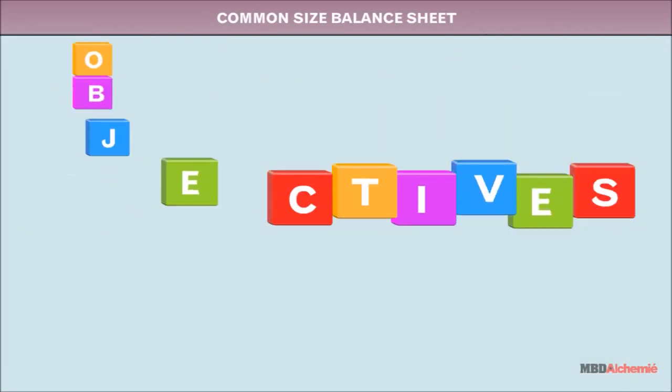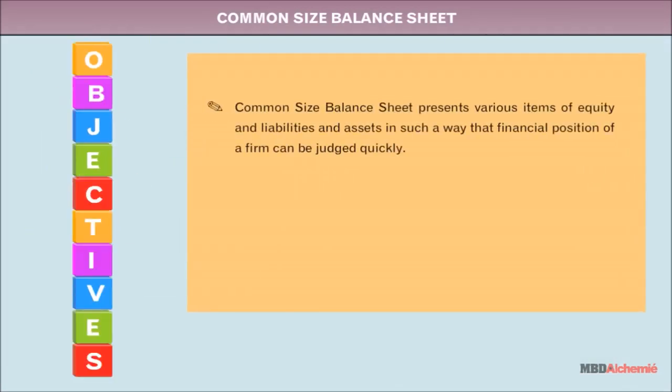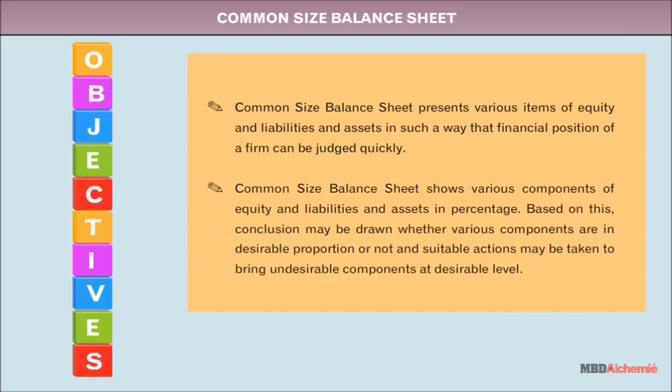The common size balance sheet presents various items of equity and liabilities and assets in such a way that the financial position of a firm can be judged quickly. It shows various components of equity and liabilities and assets in percentage. Based on this, a conclusion may be drawn whether various components are in desirable proportion or not.